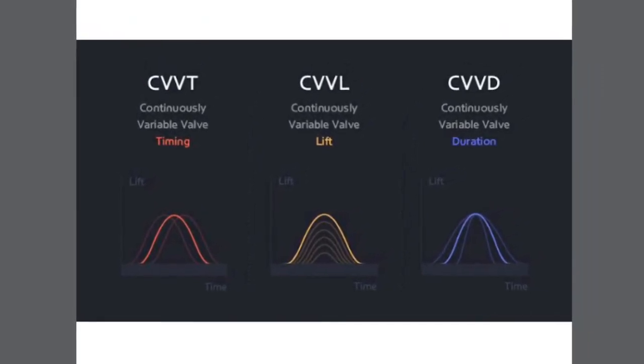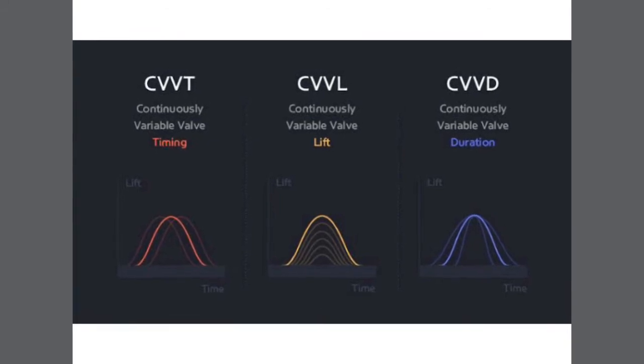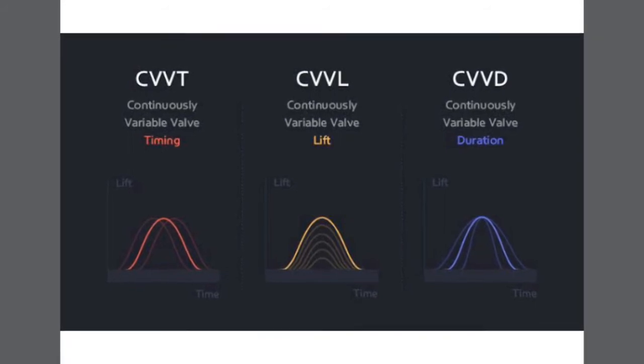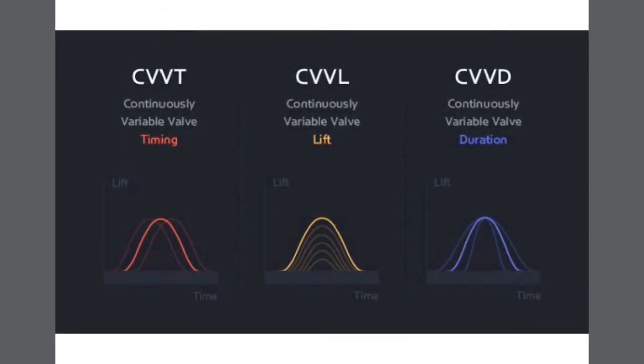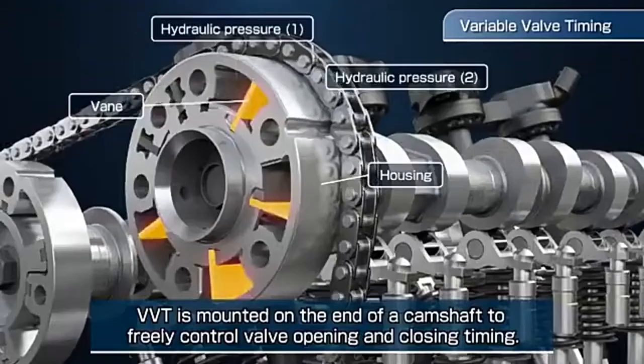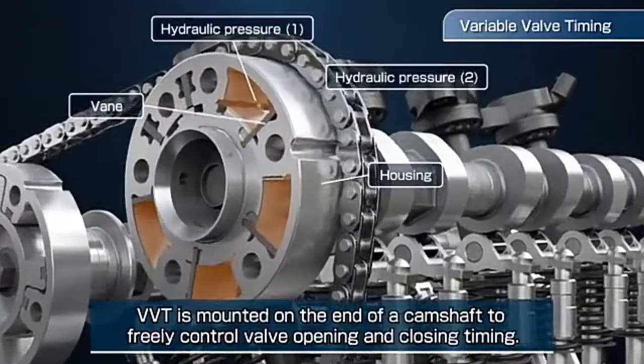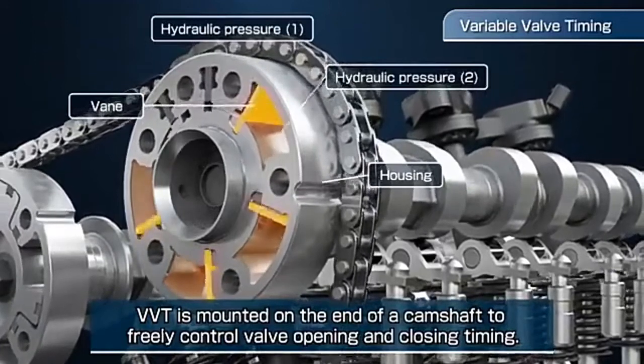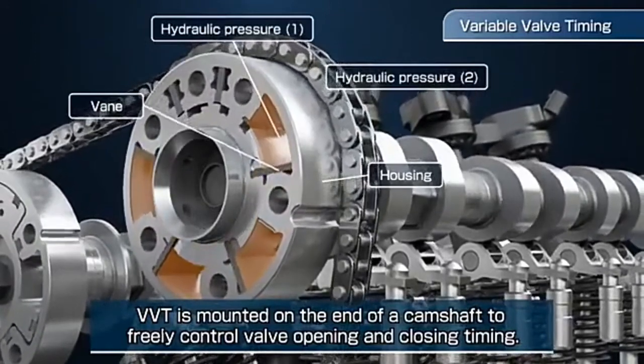In variable valve timing, which is shown as red on the left side, you will have a constant valve duration and we can change the time of valve opening and closing. It is done by using a hydraulic actuator that can tweak the angle of the camshaft for providing various valve opening and closing times according to the rev range of the engine.